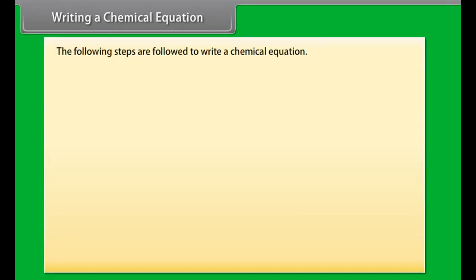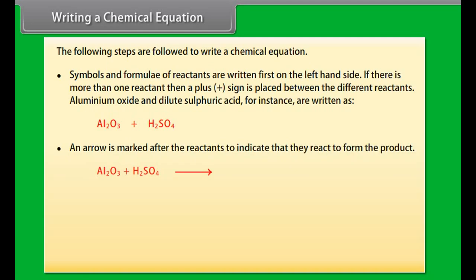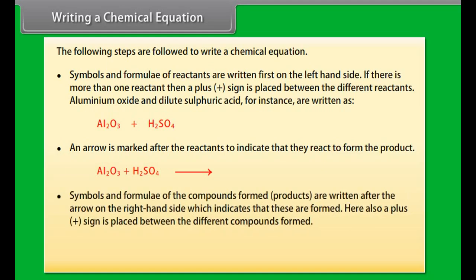The following steps are followed to write a chemical equation. Symbols and formulae of reactants are written first on the left-hand side. If there is more than one reactant, a plus sign is placed between them. For example, Al₂O₃ + H₂SO₄. An arrow is marked after the reactants to indicate reaction. Symbols and formulae of the products are written after the arrow on the right-hand side, also separated by plus signs.